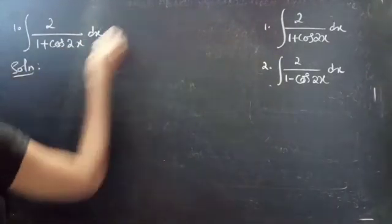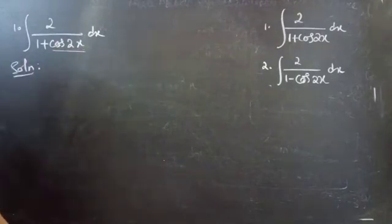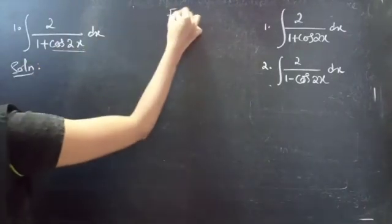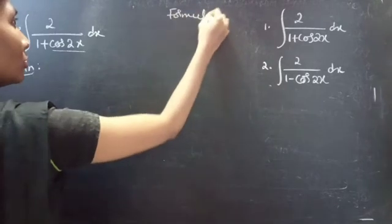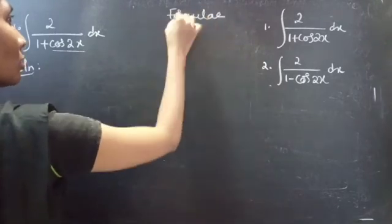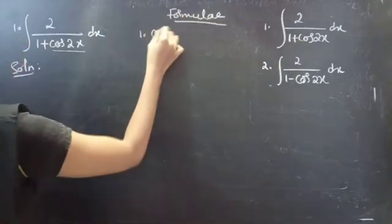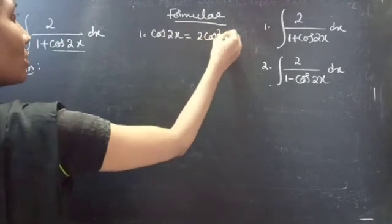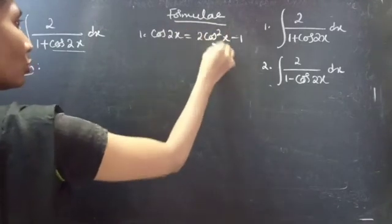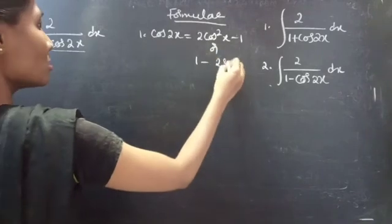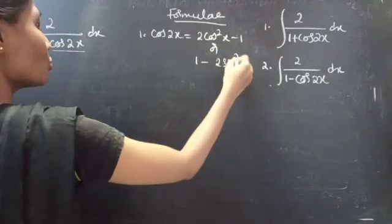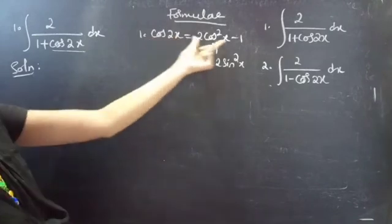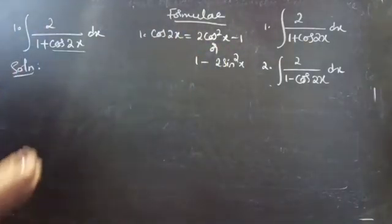Here we are going to use the formula of cos 2x. Cos 2x equals to 2 cos square x minus 1, or 1 minus 2 sin square x.